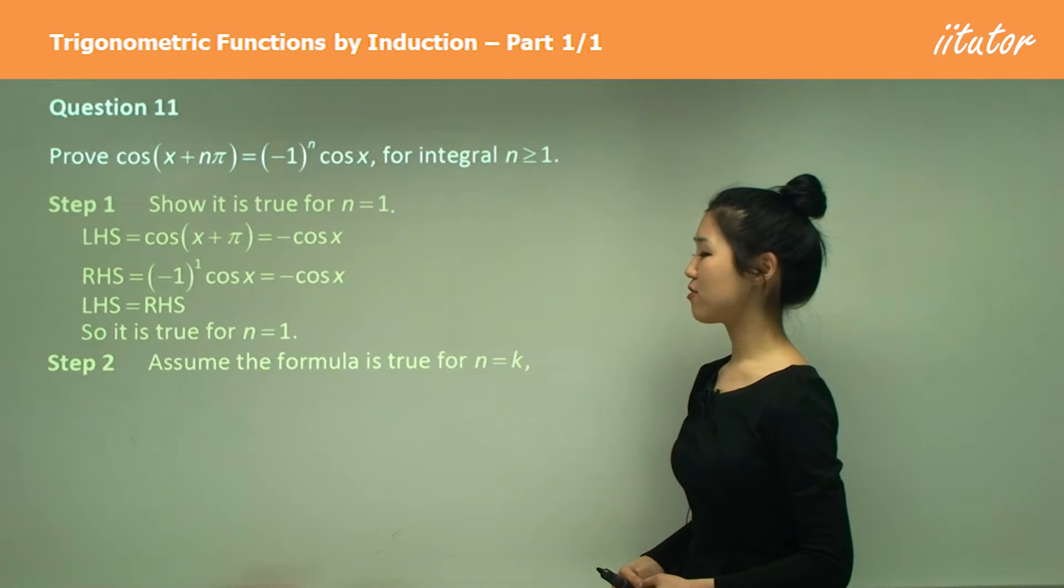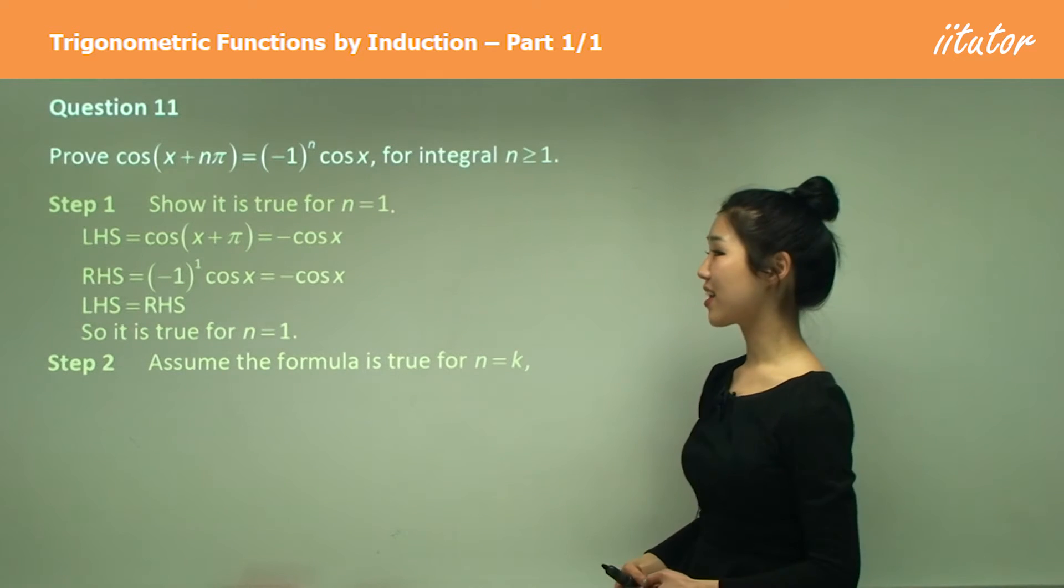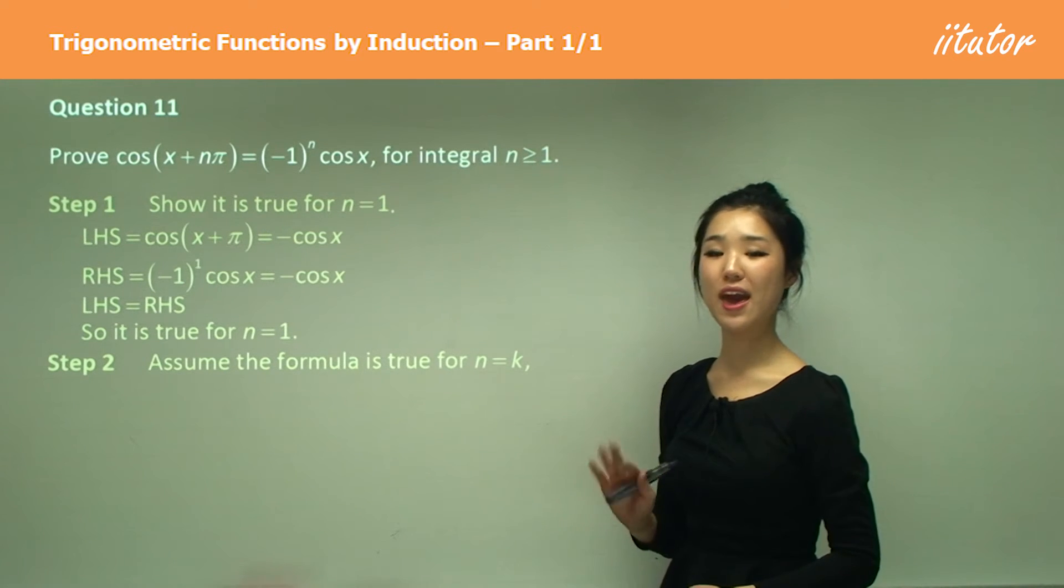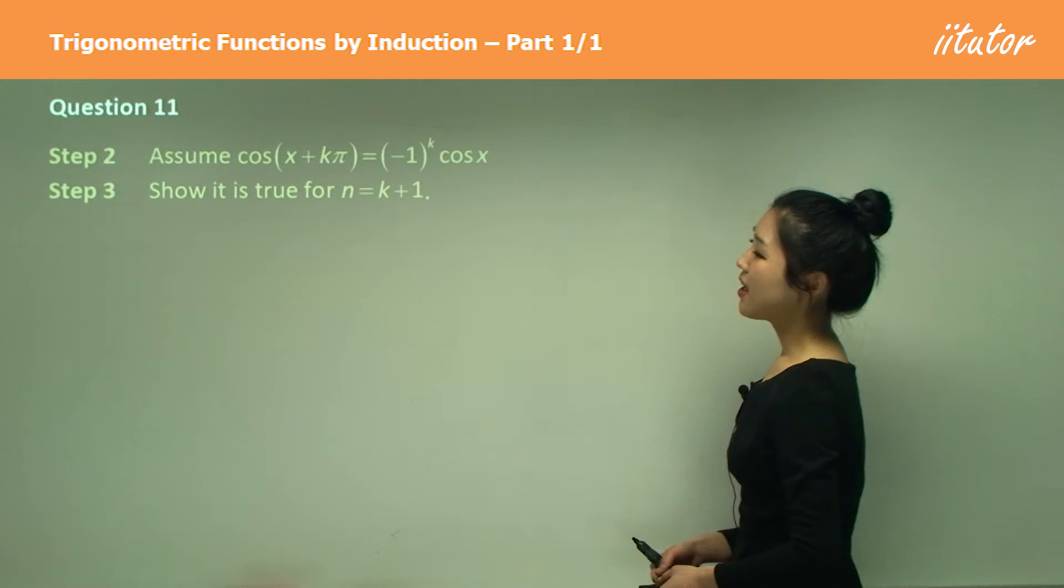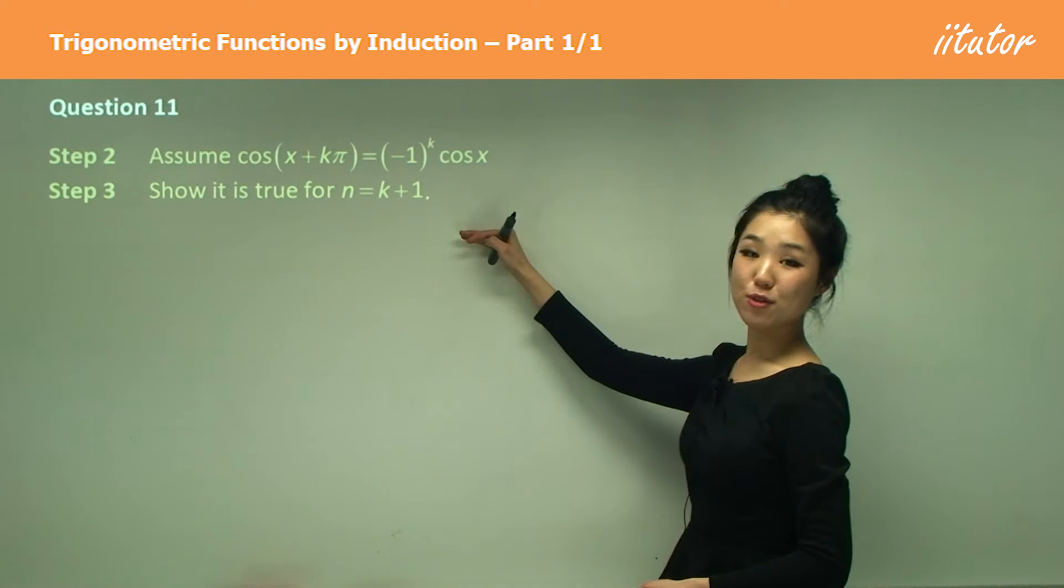Step 2, assume it's true for n equals to k. Okay, just replace all your n's with k, just like this. Now there's our assumption and now we'll do step 3.